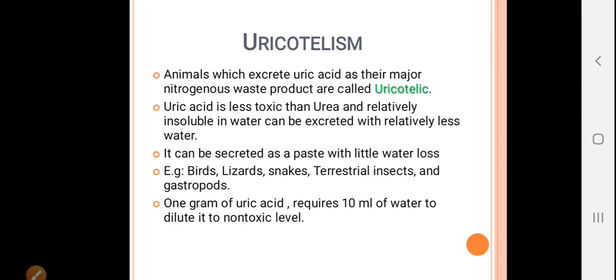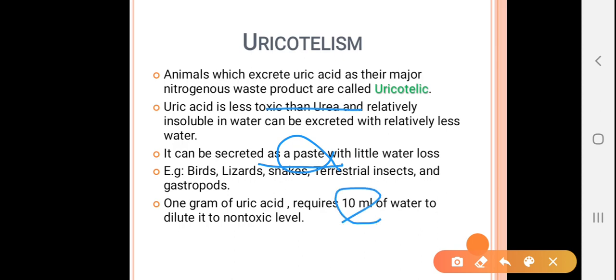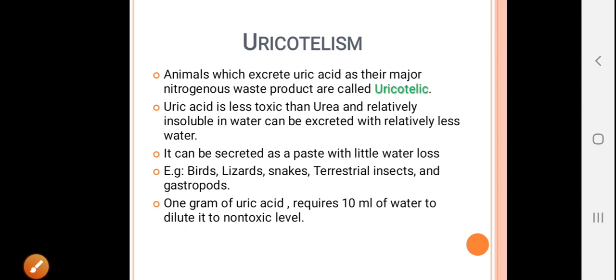Uric acid is less toxic than urea and relatively insoluble in water, so it can be excreted with much less water. It is secreted as a paste-like substance or in colloidal form, for example in birds, lizards, snakes, terrestrial insects, and gastropods.